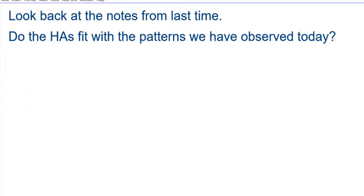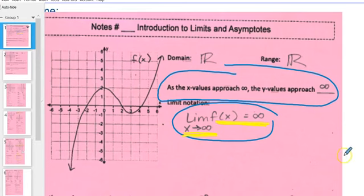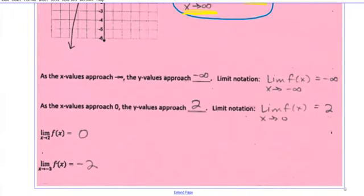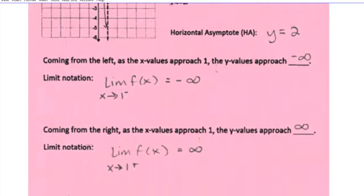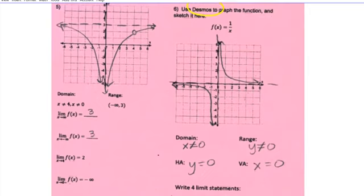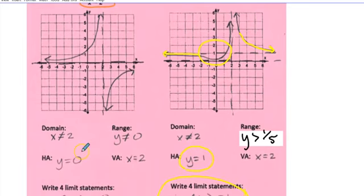Last thing: looking back at the notes from last time, do the horizontal asymptotes fit with the patterns we observed today? Let's go through those previous notes. Number six: this is bottom-heavy — the degree of the bottom is greater — so it should have a horizontal asymptote of y equals zero, and it does. Number seven: also bottom-heavy, the degree of the bottom is greater, so the horizontal asymptote should be y equals zero, and it does.